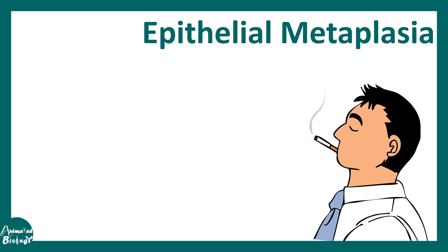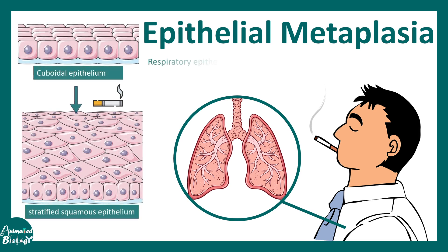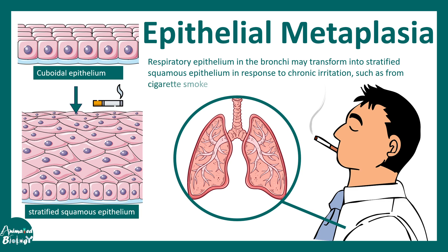A real-life example is epithelial metaplasia in a cigarette smoker's lung. In the lung, cuboidal epithelium gets converted to stratified squamous epithelium due to repetitive smoke exposure and the irritation that comes with cigarette smoke.